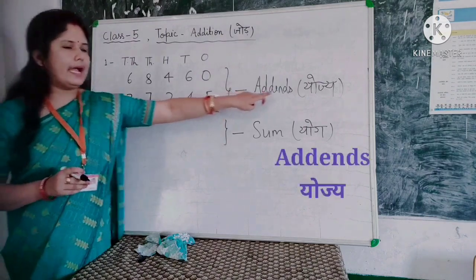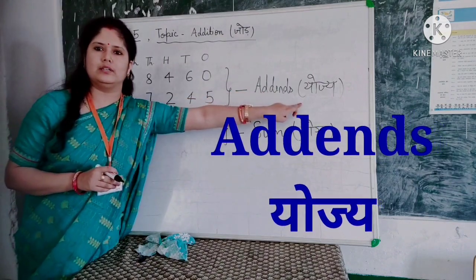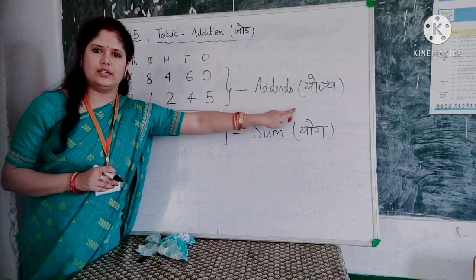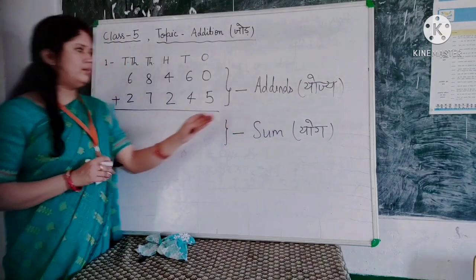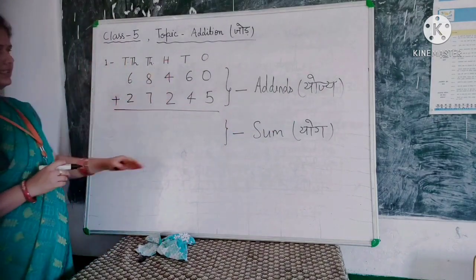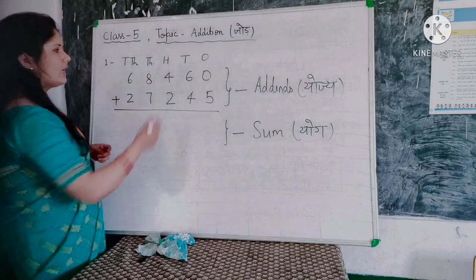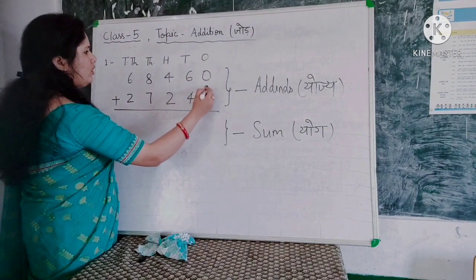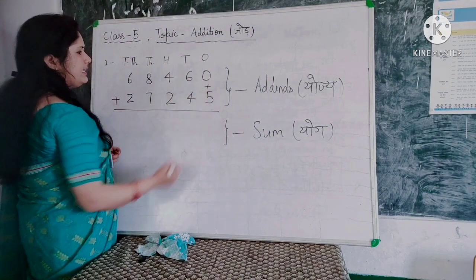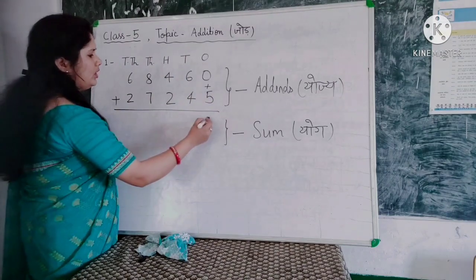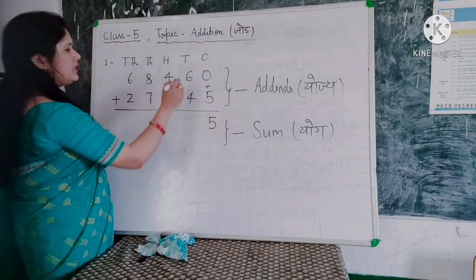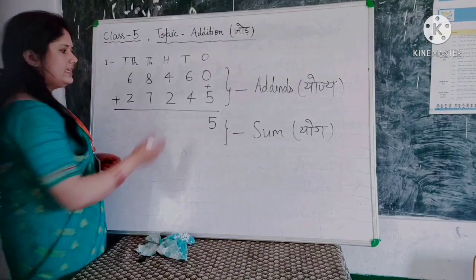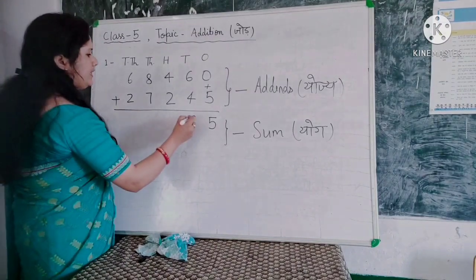We call these numbers Addends. Addends means the numbers you add together. We add these two numbers together.